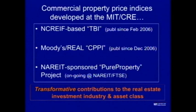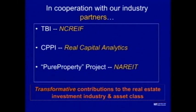It's on our website. The next index that we got involved with is now called the Moody's Real CPPI — Commercial Property Price Index — and we published that since December of 2006. That's a monthly index with its headline index — it's a whole suite of indexes. And then the third project that we have been involved with is still an ongoing project. This is an index that's not yet commercially available. It's an even more sophisticated type of index based on REIT prices, but actually looking through the REITs at the underlying property. We call this the Pure Property Index. Our partner there is NAREIT working with FTSE. So three indexes: the TBI where NACREF has been the partner, the CPPI where Real Capital Analytics has been the primary industry partner and data source, and the Pure Property Project where NAREIT has been the partner.